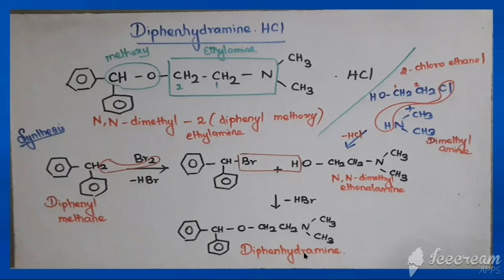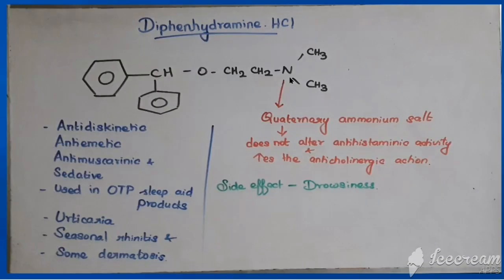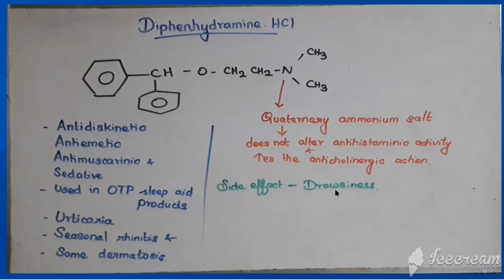In the structure of diphenhydramine there is a tertiary amine. If the tertiary amine is converted to a quaternary ammonium salt, the antihistaminic activity is not altered but the anticholinergic activity is increased. The main side effect of diphenhydramine is drowsiness. Uses include: anti-dyskinetic, anti-emetic, anti-muscarinic, sedative, OTC sleep aid products, and treatment of urticaria, seasonal rhinitis, and some dermatoses.